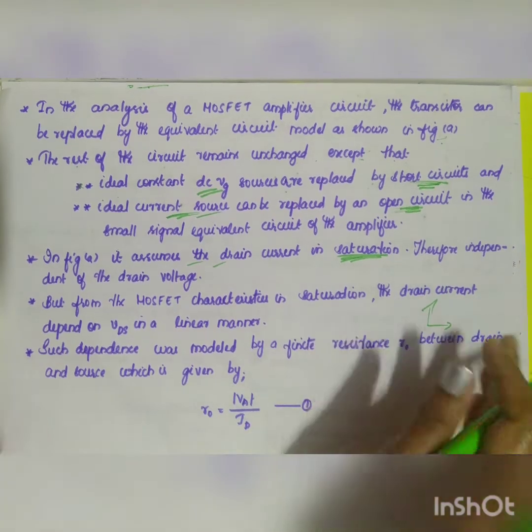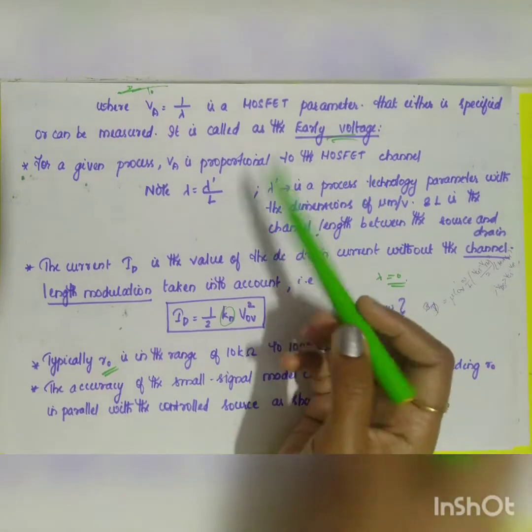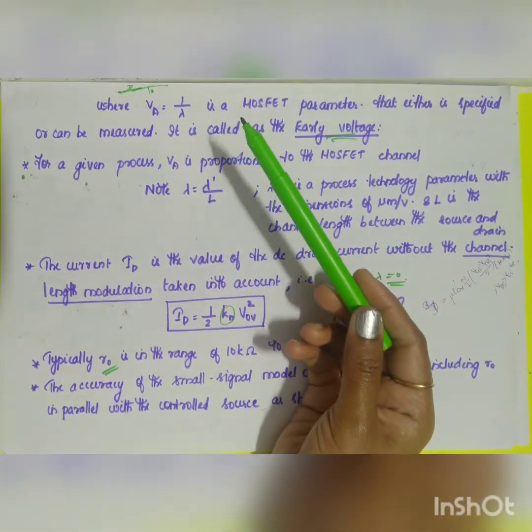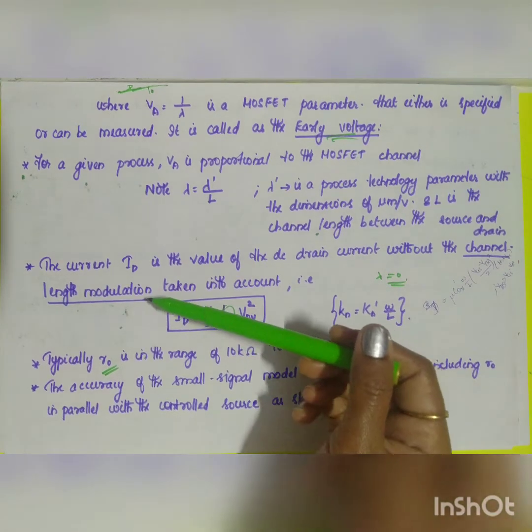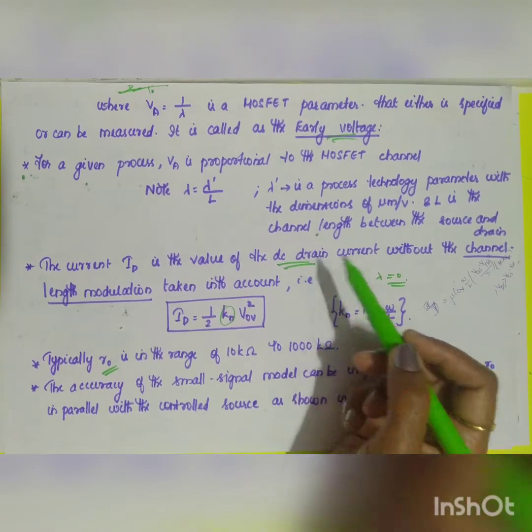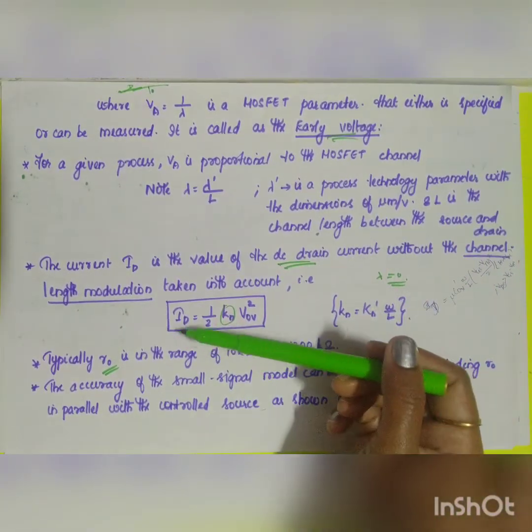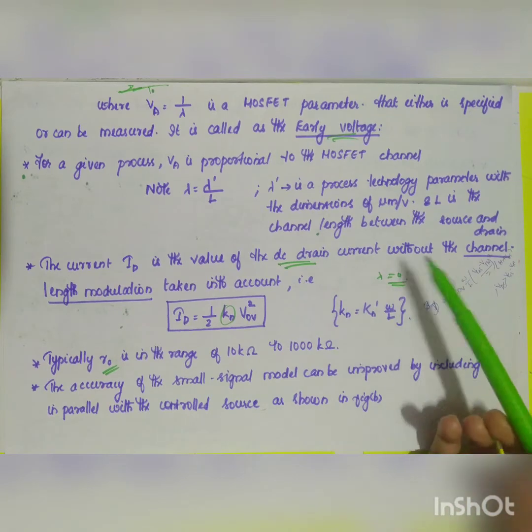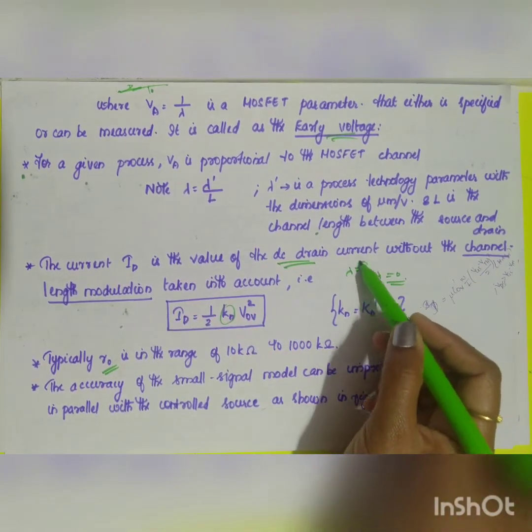You have your R naught which is equal to VA divided by ID, where VA will be equal to your early voltage. VA is equal to 1 by lambda. What about your drain current ID? The current ID is the value of the DC drain current. That's why you have capital letter, as I mentioned in the previous video. Capital ID without the channel length modulation taken into account, that is channel length modulation is not there, so lambda is equal to 0.